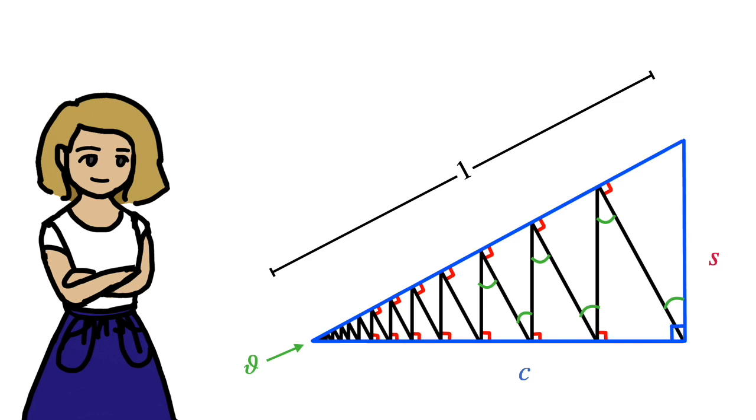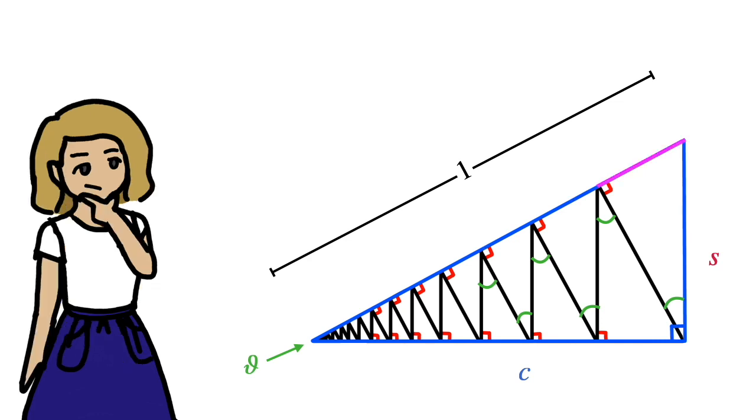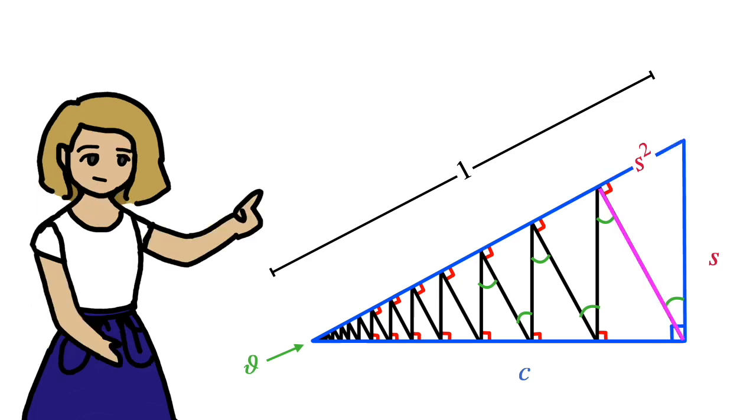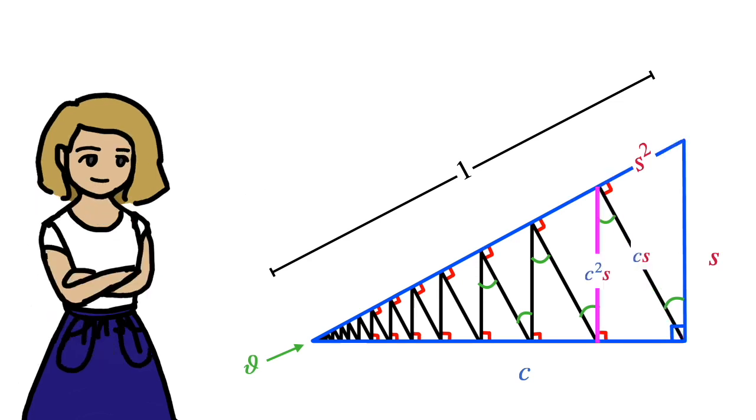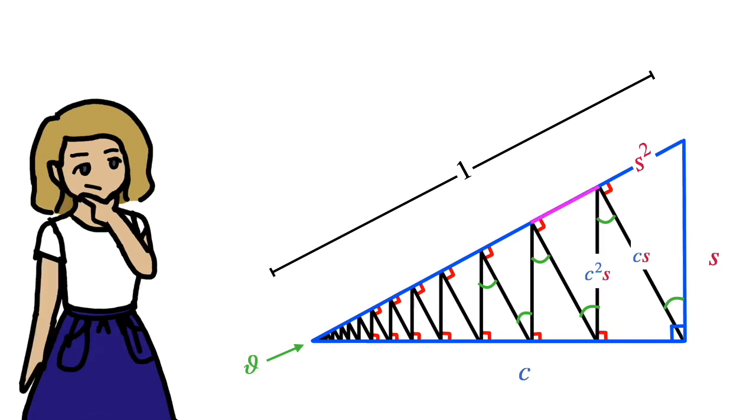Now we can look at the parts which make up the hypotenuse. This segment is going to be sine theta times s, so s squared. Then as this side equals c times s, this side equals c squared times s, and finally this length equals c squared times s squared.